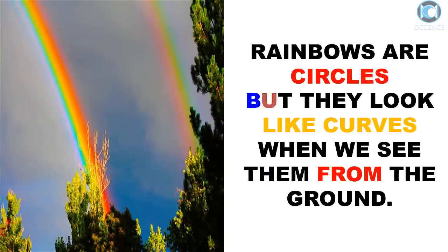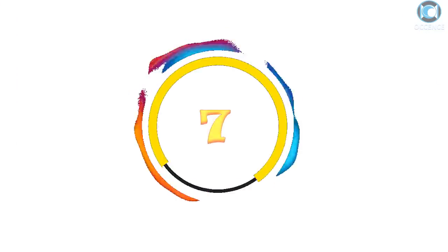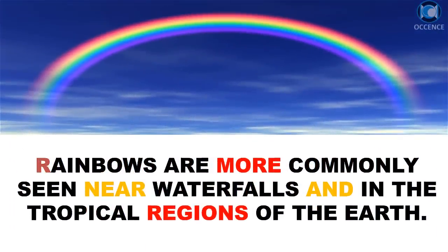Rainbows are circles, but they look like curves when we see them from the ground. Rainbows are more commonly seen near waterfalls and in the tropical regions of the Earth.